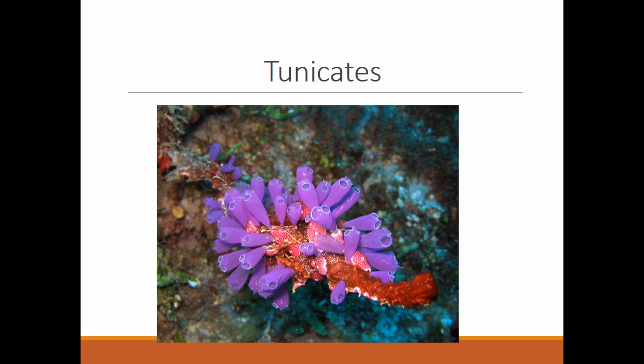The larva swims and finds a place to land, then its body metamorphosizes into the adult form. So even though this looks like a coral or sponge, it's actually a tunicate — a sea squirt. It functions similarly to a sponge, but if you look at its development it is actually a chordate. You and I are more closely related to this creature than we are to insects, octopuses, or snails if you trace back through the phylogenetic tree.